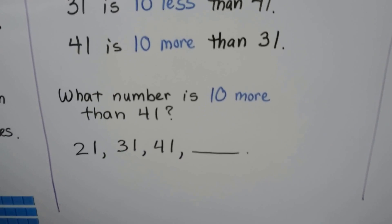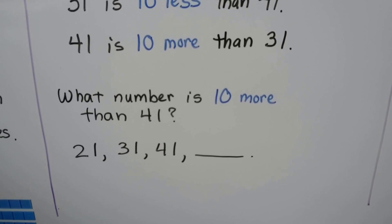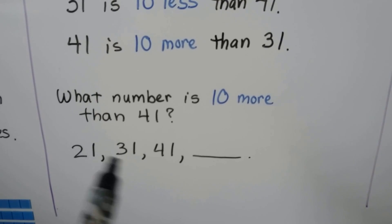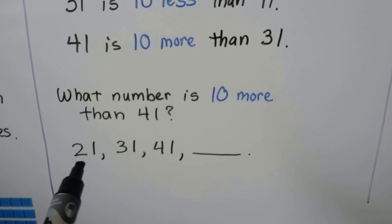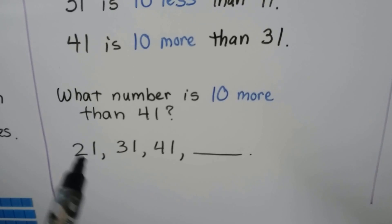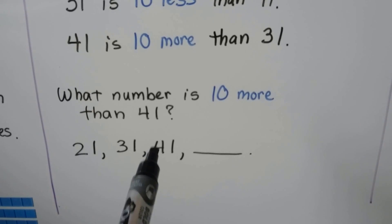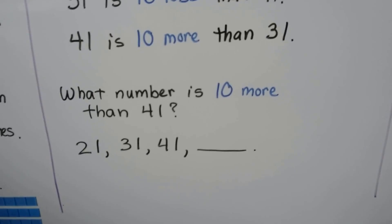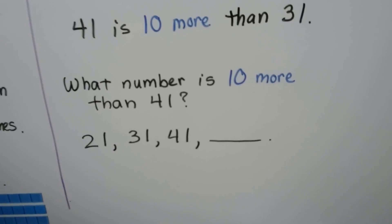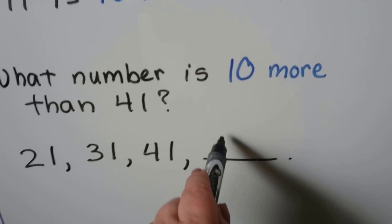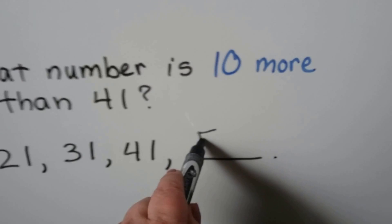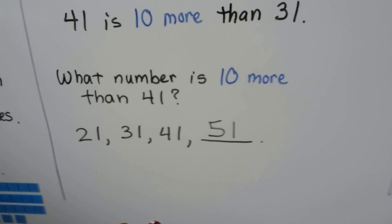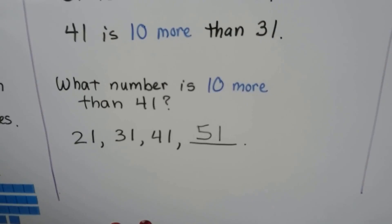So what number is 10 more than 41? Look at the tens place. All the ones are the same. This has 2 tens, 3 tens, 4 tens — so the next one will have 5 tens. And the ones are going to stay the same. So 10 more than 41 is 51.